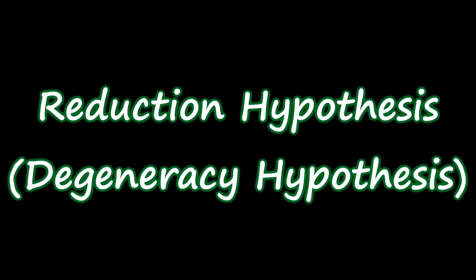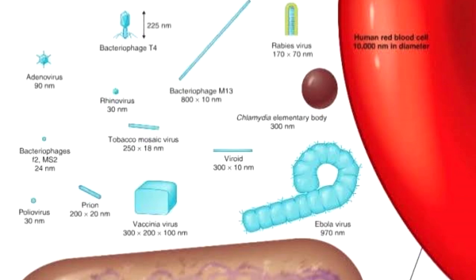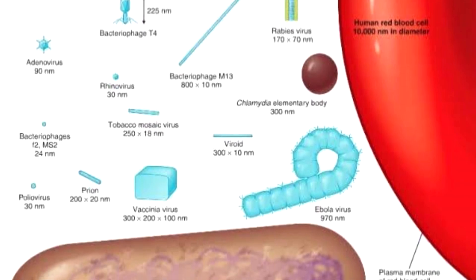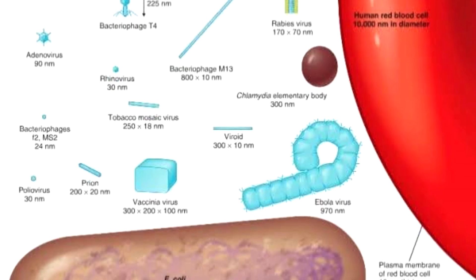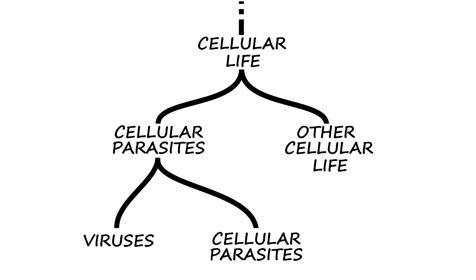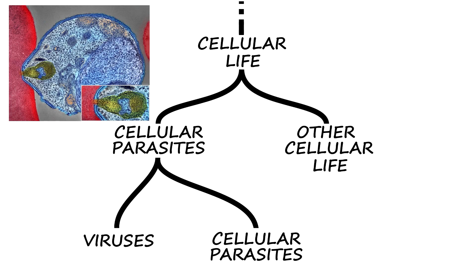The second hypothesis is the reduction hypothesis, also known as the degeneracy hypothesis. Important to know for this hypothesis is that viruses are very small, a lot smaller than even the smallest living cells. This hypothesis states that viruses were once small parasitic cells that parasitized larger cells.